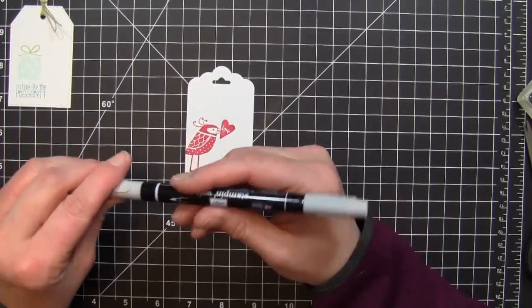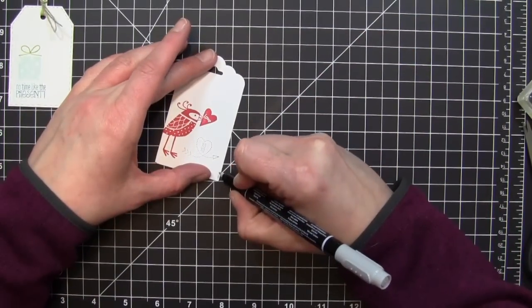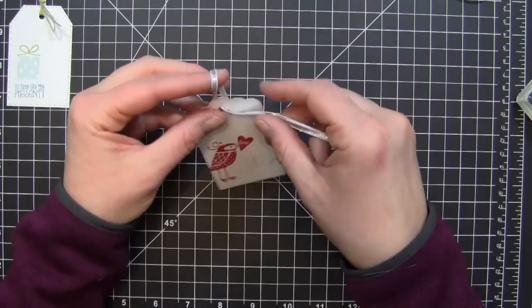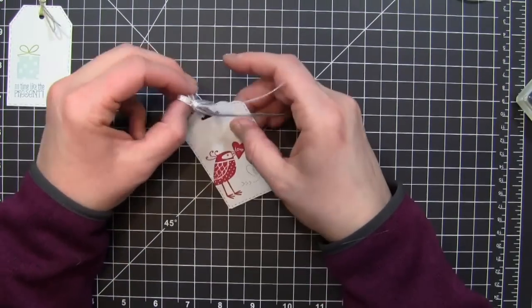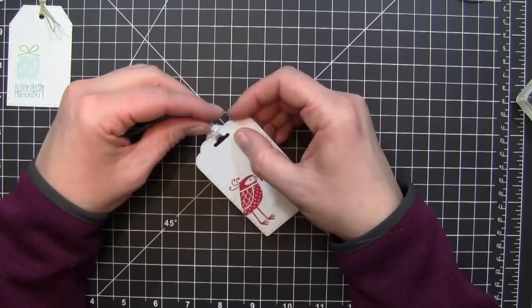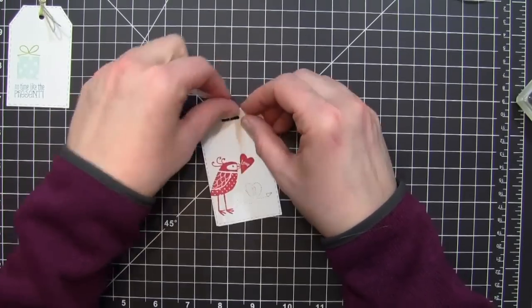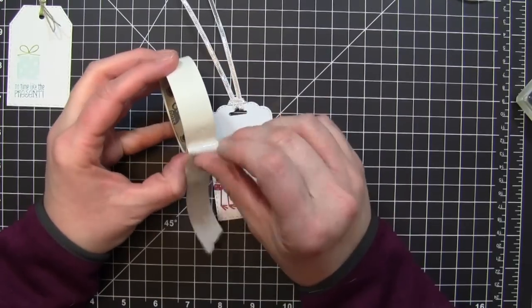The next thing here, I'm going to do the faux stitching on this as well with the Smoky Slate ink from the Stampin' Write marker. Once I have that done, I'm going to add some of the silver taffeta ribbon to the top of this. For this one, I kind of looped it, pulled it through the hole and then pulled the ends through to give it a different look instead of tying a bow or anything on it.